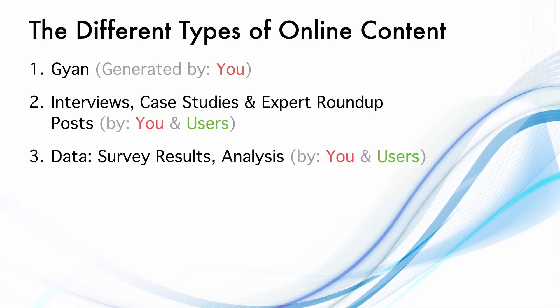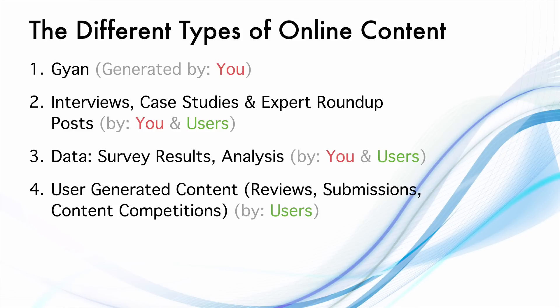The third type of content is data — including survey results and analysis — generated by you and your users. The fourth type is user generated content, which is mostly organized by you but generated by users. Reviews, submissions, and content competitions are some examples of user generated content.